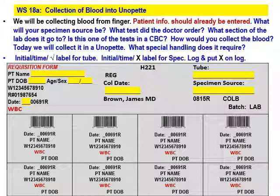Pause this and make sure you're knowing how to read this requisition. I know you already do because we were going through this in lab before the COVID-19 stay-at-home issue. If you're not getting it, reach out to me. So the doctor ordered a WBC, right? A WBC is one of the tests in a CBC, so what section of the lab would we take WBCs and CBCs to? Hematology. And remember, hematology also houses urinalysis and coagulation.